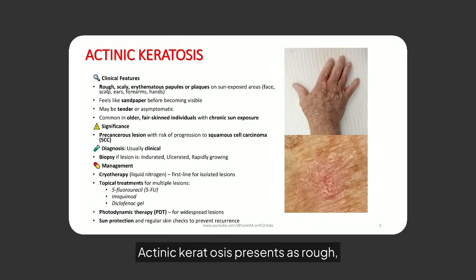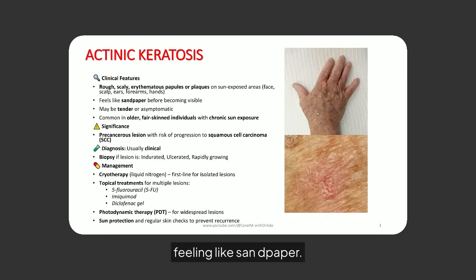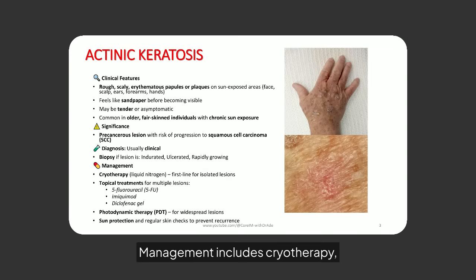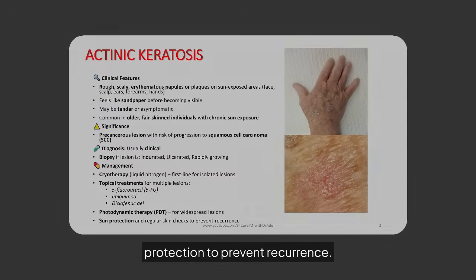Actinic keratosis presents as rough, scaly papules on sun-exposed skin, feeling like sandpaper. Common in fair-skinned individuals, it poses a risk of progressing to squamous cell carcinoma. Management includes cryotherapy, topical treatments, and sun protection to prevent recurrence.